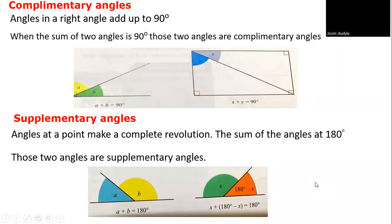Complementary angles are angles in a right angle that add up to 90 degrees. When the sum of two angles is 90 degrees, those two angles are complementary. For example, A + B = 90 degrees, and X + Y = 90 degrees.